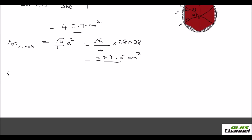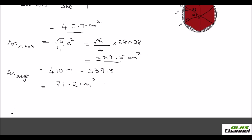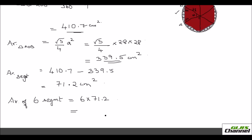Area of one segment = area of sector − area of triangle = 410.7 − 339.5 = 71.2 cm². Since there are six such segments, area of six segments = 6 × 71.2 = 427.2 cm².